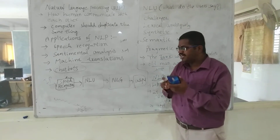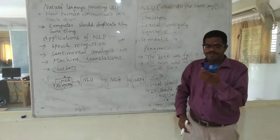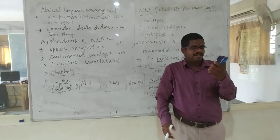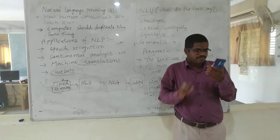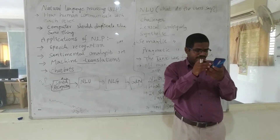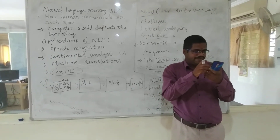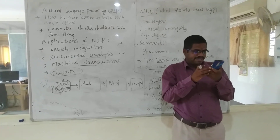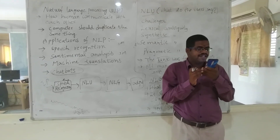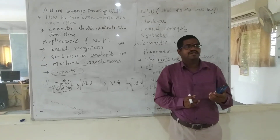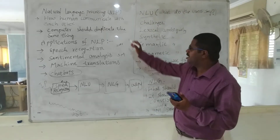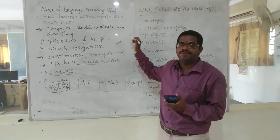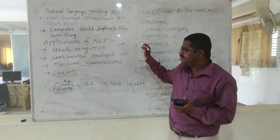For speech recognition in real time on mobile, I can speak and the Google assistant listens. For example, in Google voice recognition, I say 'electric scooter' and it immediately prints all the information about electric scooters — whether in English, Japanese, or any other language.